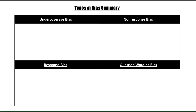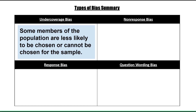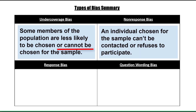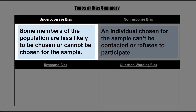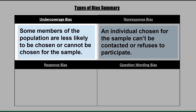This table summarizes the four main types of bias. The first is under coverage, which occurs when some members of the population are less likely to be chosen or cannot be chosen for the sample. Non-response bias occurs when an individual chosen for the sample can't be contacted or refuses to participate. These two get mixed up a lot. With under coverage, some part of your population of study is completely left out and has no chance to participate — these subjects don't even have the opportunity to make the list of those to be sampled. It's like they didn't even exist.